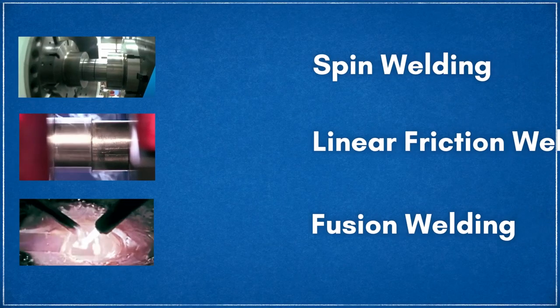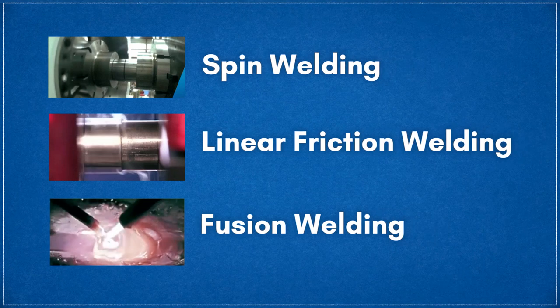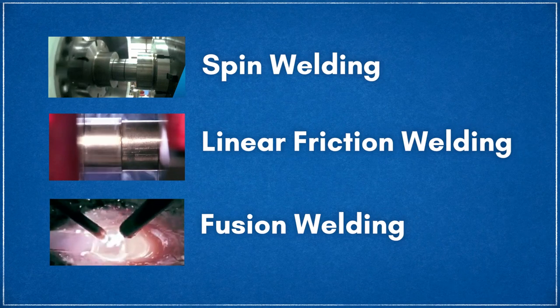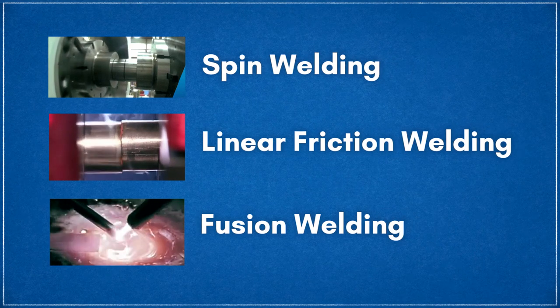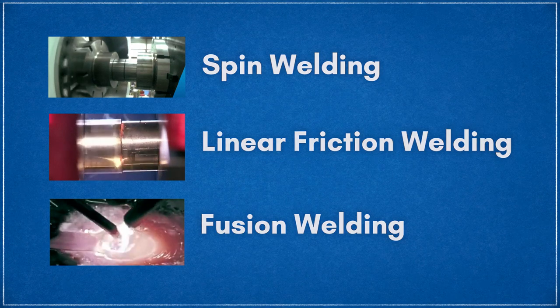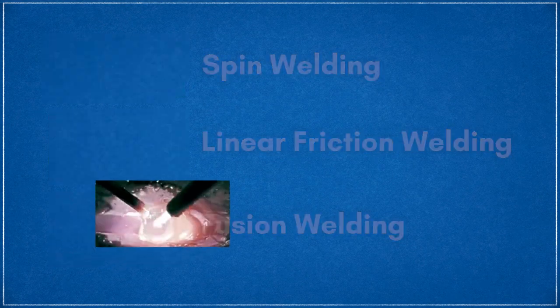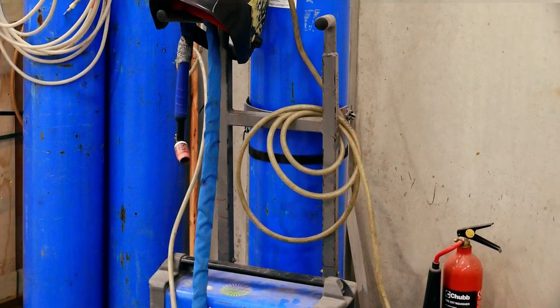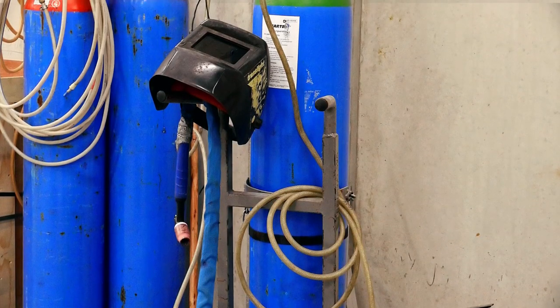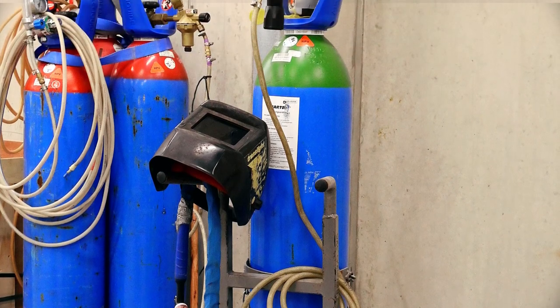The benefits of spin and linear friction welding far outweigh those of traditional fusion welding. The biggest advantage is the cleaning effect the rotary and linear motion has on the mating surface. This is in contrast to fusion welding where oil, wax layers, paint, or scale must be meticulously removed to ensure a reliable bond. As a result of this cleaning effect, there is no dependency on inert gases found in traditional welding.